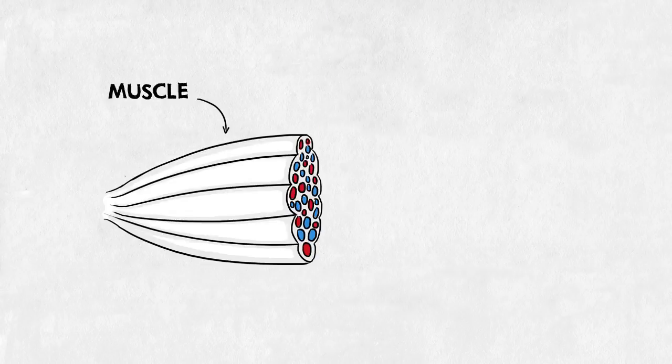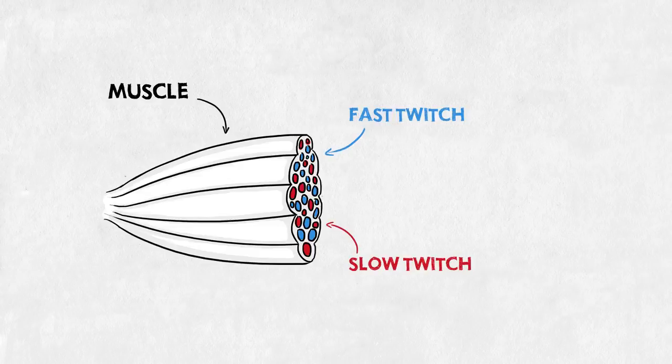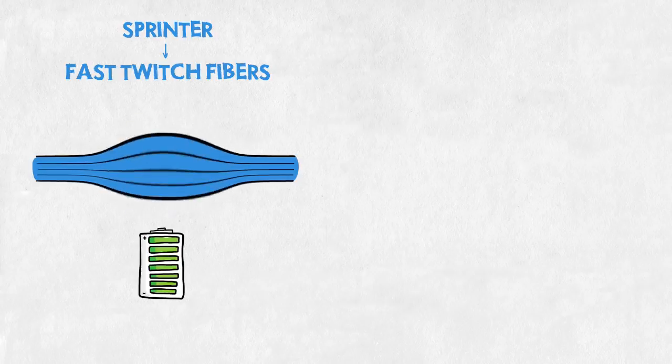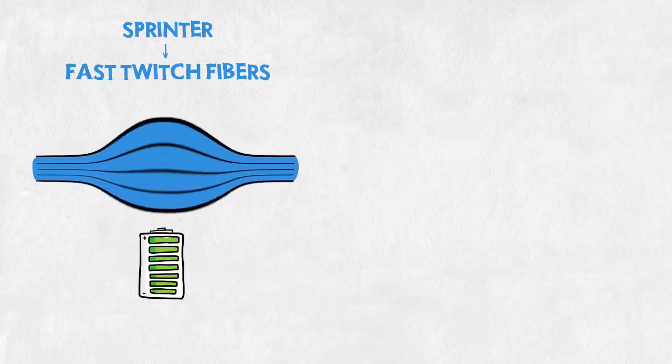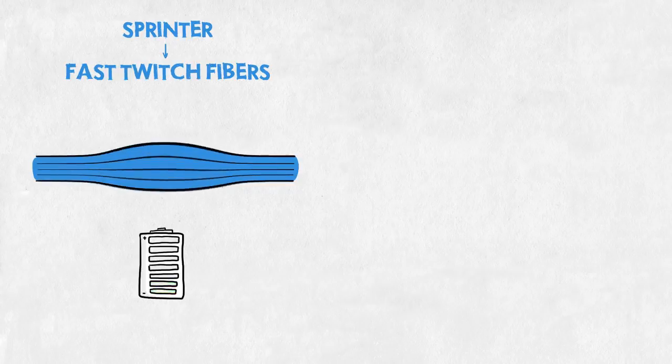What you need to know about muscles is that they contain different fibers: fast twitch and slow twitch. A sprinter will primarily train his fast twitch fibers. These react instantly and work super fast, but quickly run out of power.